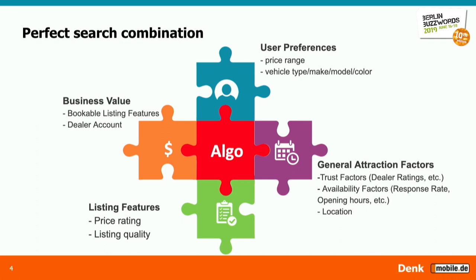We have many different aspects to consider. There are the hard constraints — make, model, colour, anything the user sets, we have to show them. If they search for a black BMW, we don't show them a blue Audi. On top of that we have business value: our dealers have different types of accounts and bookable features, and if they've paid for a featured advert, that has to be taken into account. We also have general attraction factors — where the dealer is located, how highly rated they are, whether they respond to enquiries.